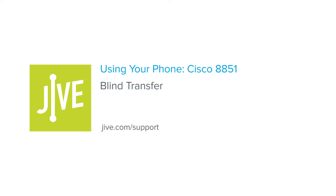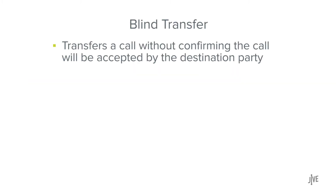In this video, you will learn how to perform a blind transfer on a Cisco 8851 phone. A blind transfer routes a call to a third party. The original call is then ended, and no confirmation is made to determine whether the transferred call is answered or if the number is busy.